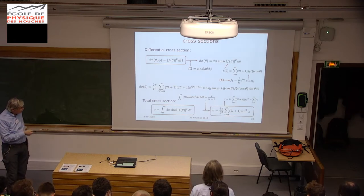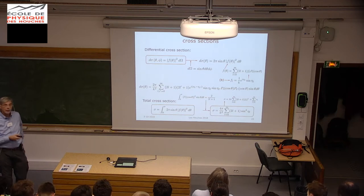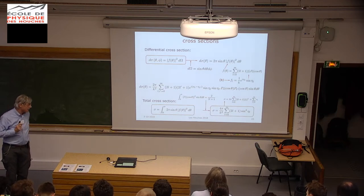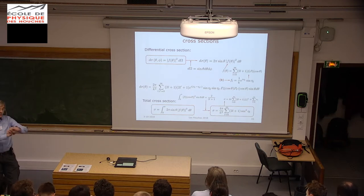The total cross-section with this equation is written as the sum of the cross-sections of the partial waves—a very convenient and transparent form. The cross-section depends on sine squared of the phase shift.